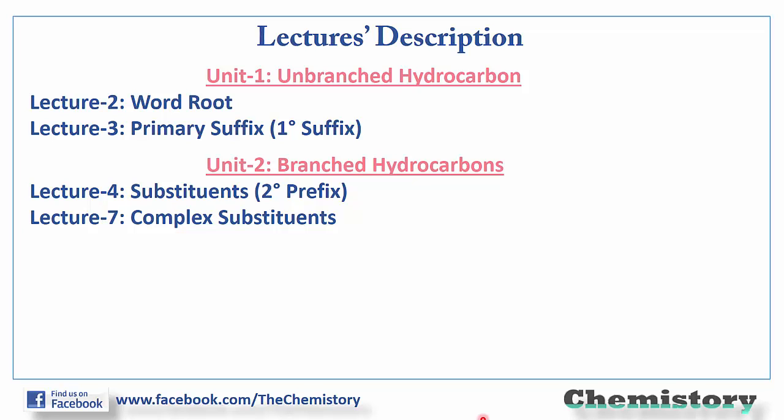fluoro, methyl, ethyl, etc. Adding these substituents to our straight chain hydrocarbons makes them branched hydrocarbons. Substituents are also of two types: simple substituents and complex substituents.